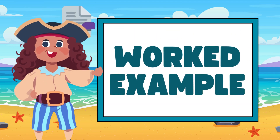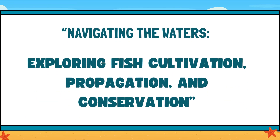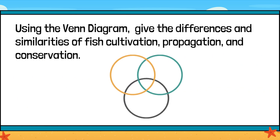Worked example: Navigating the Waters — Exploring fish cultivation, propagation, and conservation. Using the Venn diagram, students will give the differences and similarities of fish cultivation, propagation, and conservation.